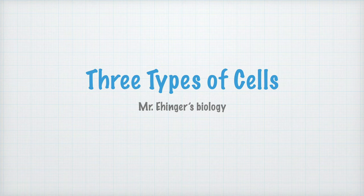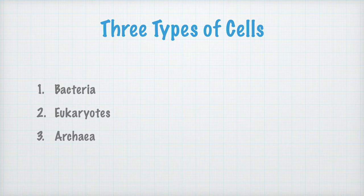You've already learned that all living things are made of cells. But there are a few different types of cells, and that's what we'll look at right now. The types of cells I want you to learn about are these: bacteria, eukaryotes, and archaea.